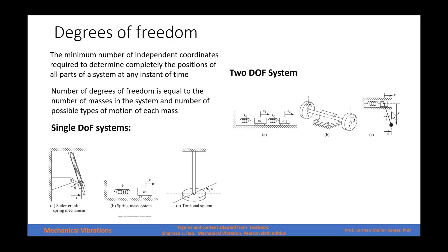Then we have a pendulum. The displacement of this mass can be described either with the rotation of the bar, the linear displacement of the bar, or the vertical position of the bar. We have three possibilities, but since it's a two degrees of freedom system, we will choose the variable that describes the displacement of the mass and one of the variables that describes the motion of the pendulum.